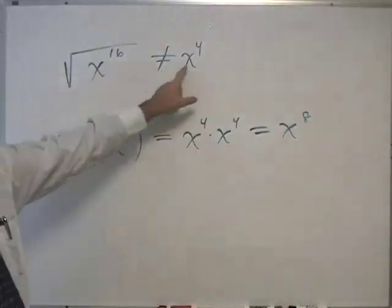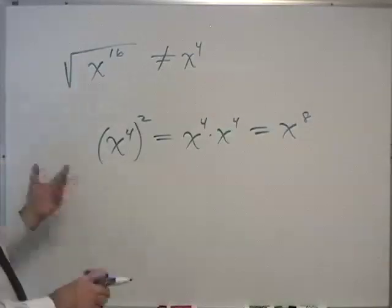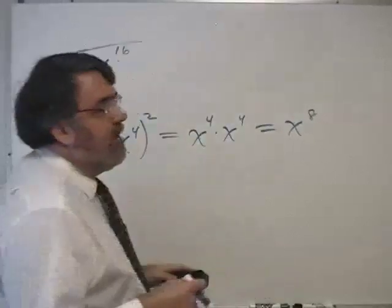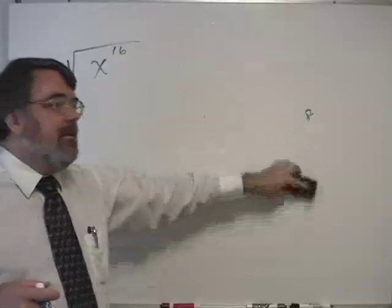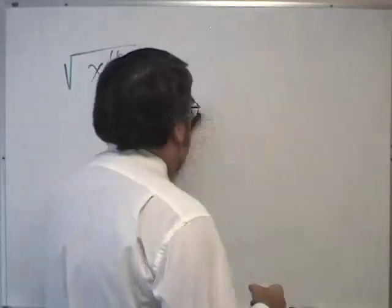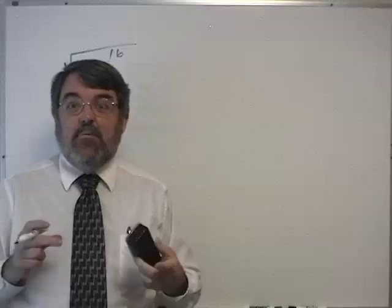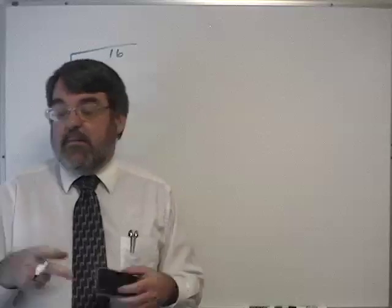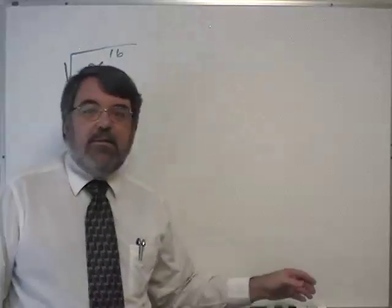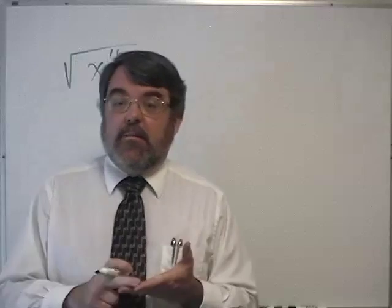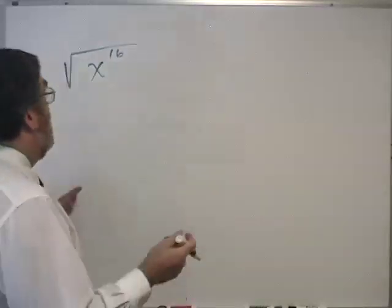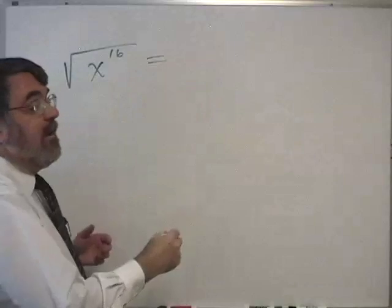Since I get x to the eighth and not x to the sixteenth, this is obviously wrong. Please be careful about those oversights. But what would it be? When we check a square root, we raise it to the second power. Raising a number to the second power doubles the exponent, multiplies it by two.